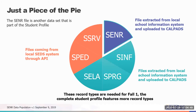You can see the student enrollment in purple. The student information, abbreviated SINF. The student program, abbreviated SPRG. The student English language acquisition, that's the SELA. And then you have the SPED and the SSRV for special education program and related services.